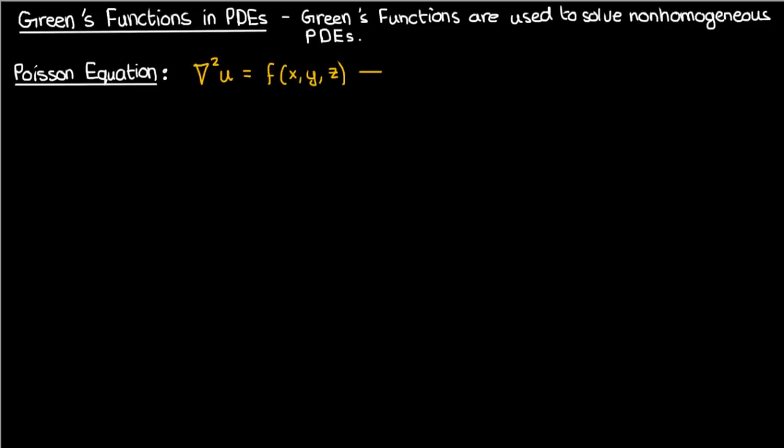It involves the Laplacian of an unknown function u, and by Laplacian I mean the second partial with respect to x plus the second partial with respect to y plus the second partial with respect to z. The Poisson equation says that the Laplacian of u equals some function f of x, y, and z.